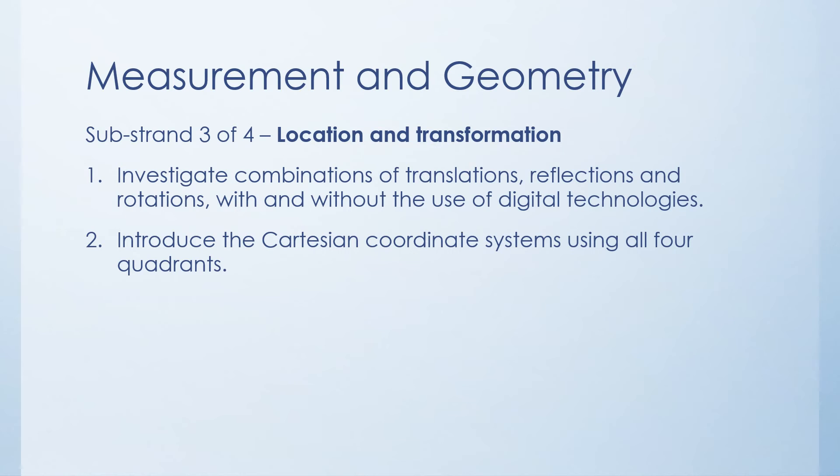The third substrand within measurement and geometry is location and transformation. And that really involves the combinations of translations, reflections and rotations with and without the use of digital technologies. I guess in this instance, less so calculators and more so computers where it might show you the Cartesian coordinate system. Translations just means shifting things left or right or up or down. Reflection means like a mirror reflection and rotations means they're rotating in a different way. So for example, if it was like an arrow shape pointing up, if it was rotated 90 degrees clockwise, the arrow would now be facing to the right.